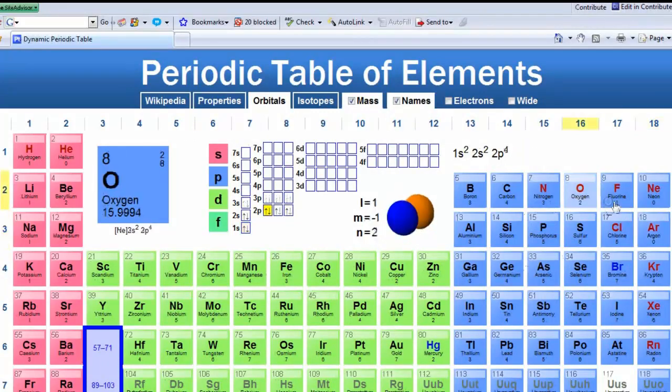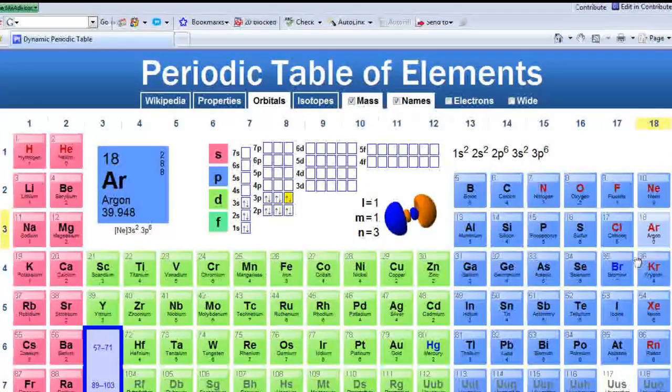It would pick up one, two, three electrons. Phosphorus would form phosphide with one, two, three extra electrons, so it would be phosphorus with a negative three.